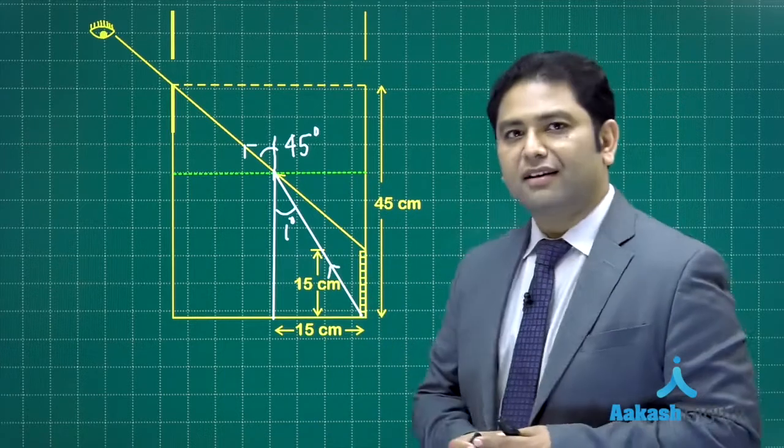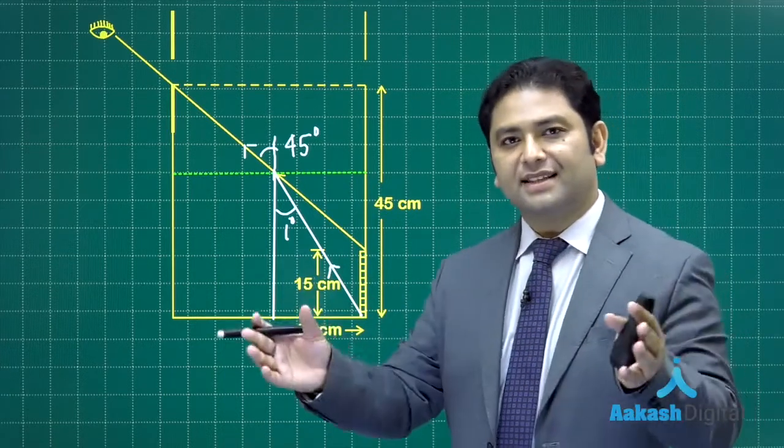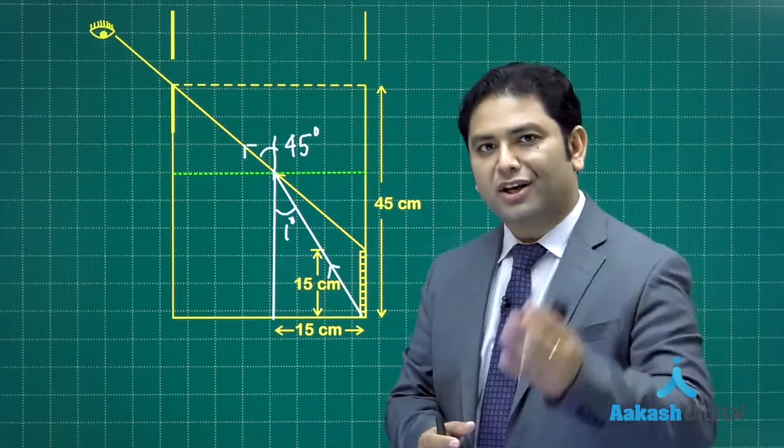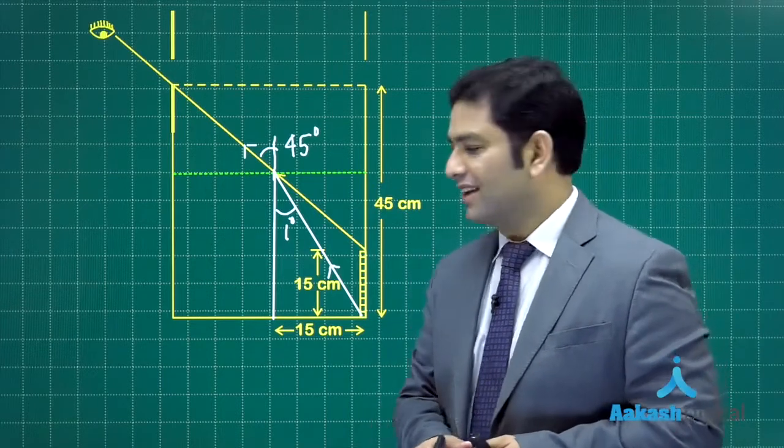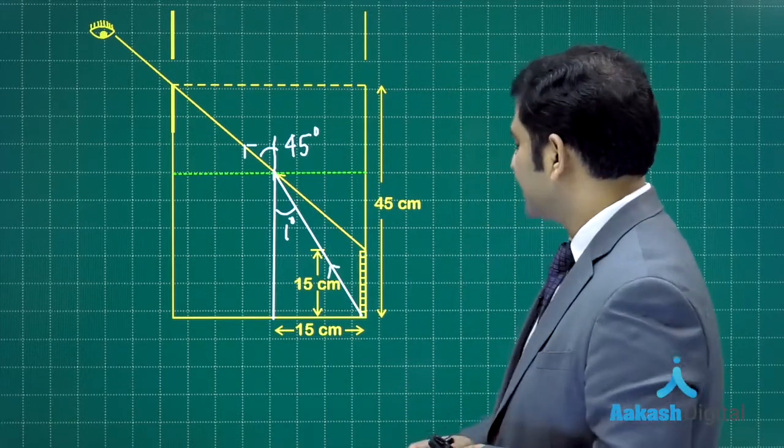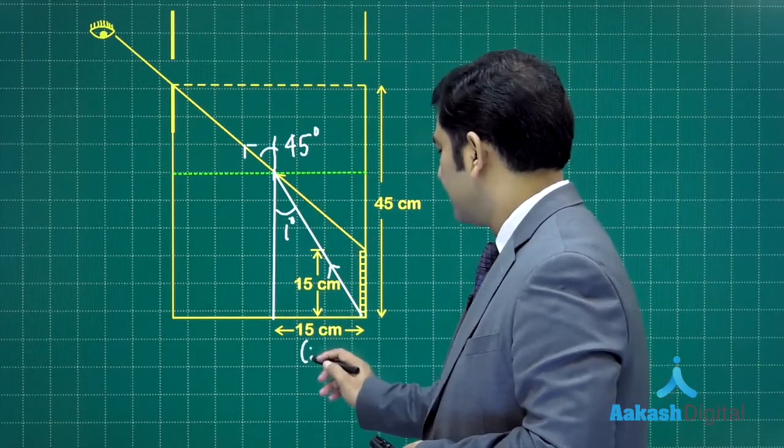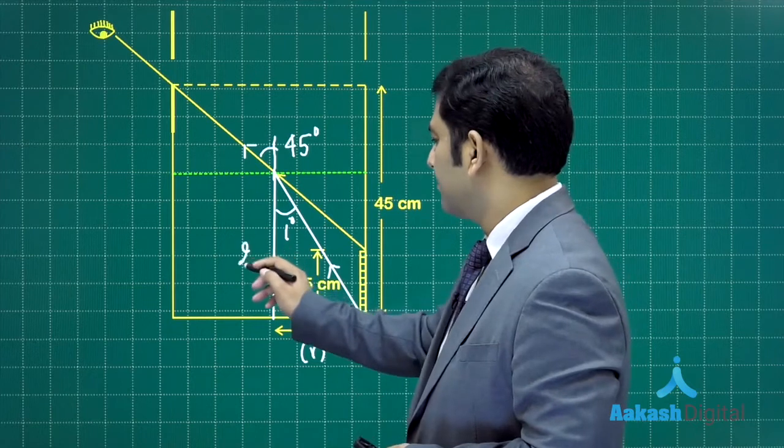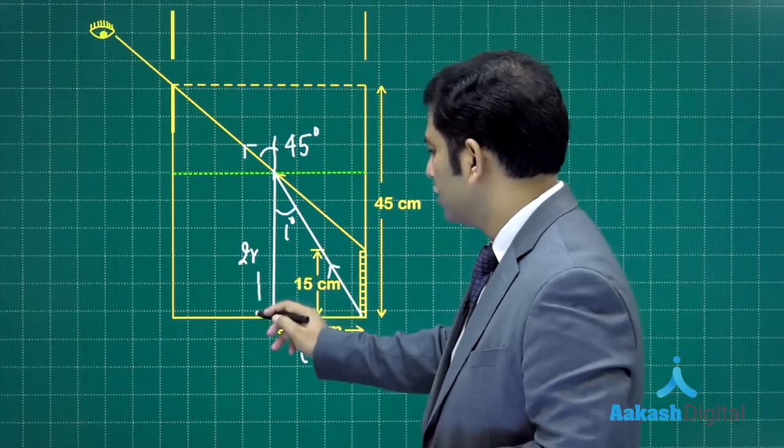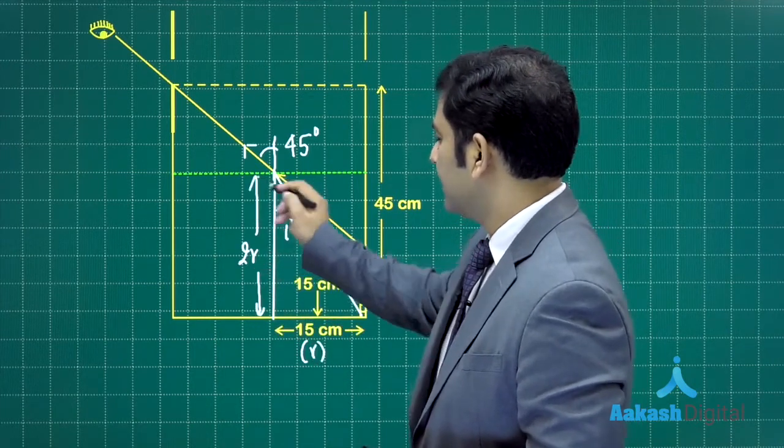So let's calculate the angle of incidence, more precisely sine of that, because we require to use Snell's law. That's very simple. This is 15 and this is 30. So let's call this as r and this height magnitude-wise equals 2r, that is the given height.